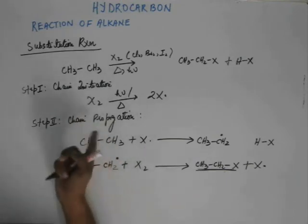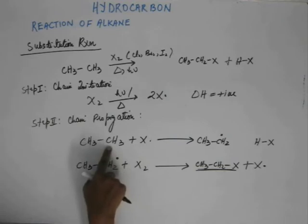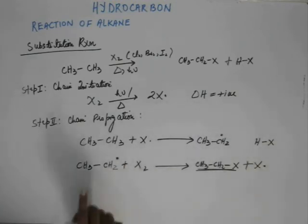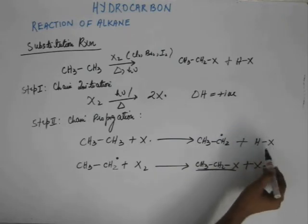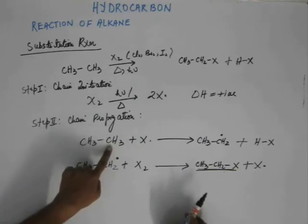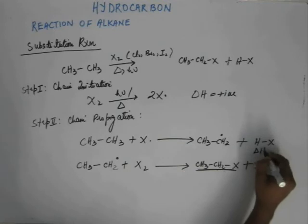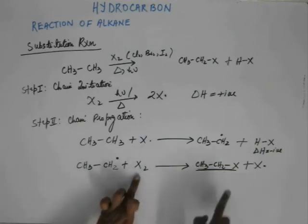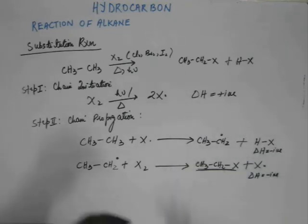In the initiation step, heat must be given to break the X–X bond, so delta H is positive. In the first propagation step, a non-polar C–H bond (weak, similar electronegativities) is broken and a polar H–X bond (strong, due to electronegativity difference) is formed — so delta H is negative, energy is released. Similarly, in the second propagation step, the weak X–X bond is broken and a strong C–X bond is formed, so delta H is also negative.